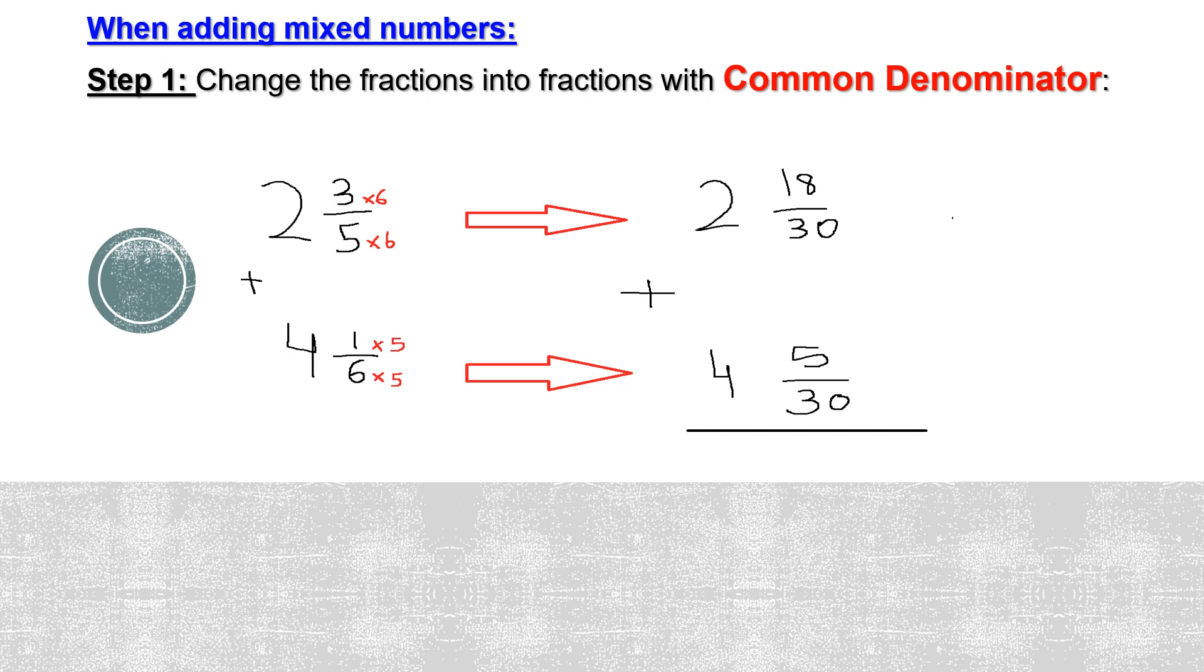The first fraction, 3 over 5, the numerator and denominator are multiplied by 6, which is the denominator of the second fraction. And we get 2 and 18 over 30 plus 4 and 5 over 30.